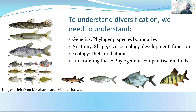To get a complete picture, we also need to know about all other aspects of biology. Anatomy is a big part of this — we need to know about shape and size of the organisms, their osteology (meaning their skeleton), their development, and the functional differences between morphologies. We also need to know an awful lot about ecology: what do they eat, where do they live, what's their trophic niche and habitat? To form links among all of these, we need phylogenetic comparative methods that link anatomy and ecology to the phylogeny.